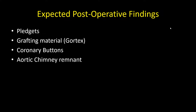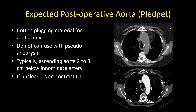The expected findings we're going to go over include the visual appearance of post-operative pledgets, grafting material — particularly Gore-Tex — coronary artery buttons, and aortic chimney remnants. It's very important to understand what the normal post-operative findings are so as not to mischaracterize these imaging findings as complications.